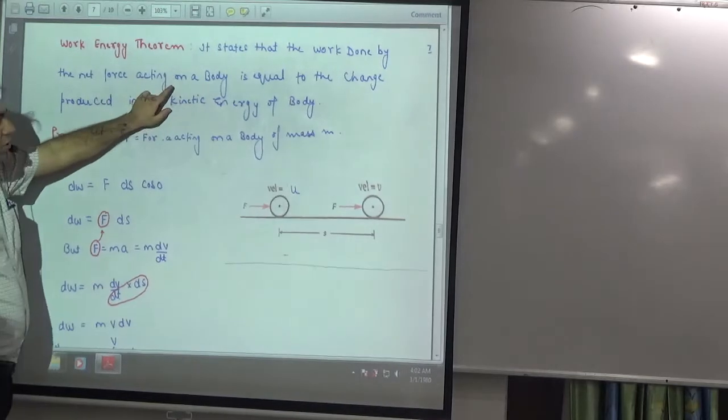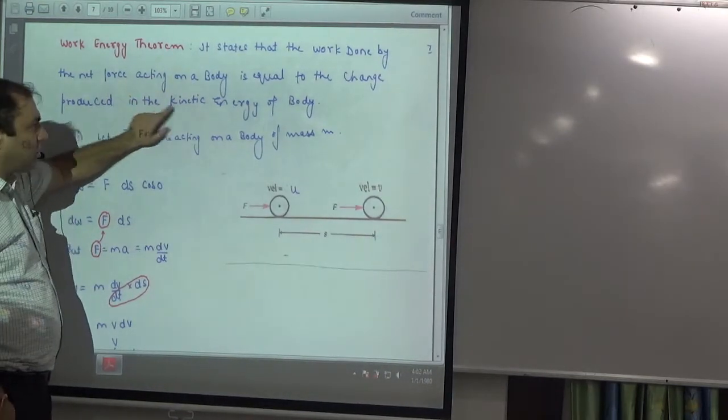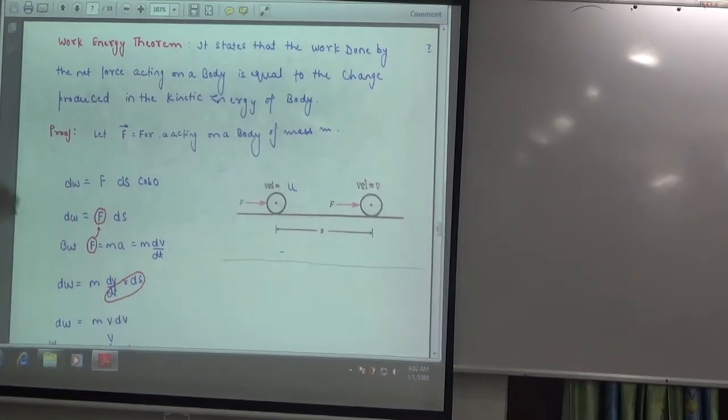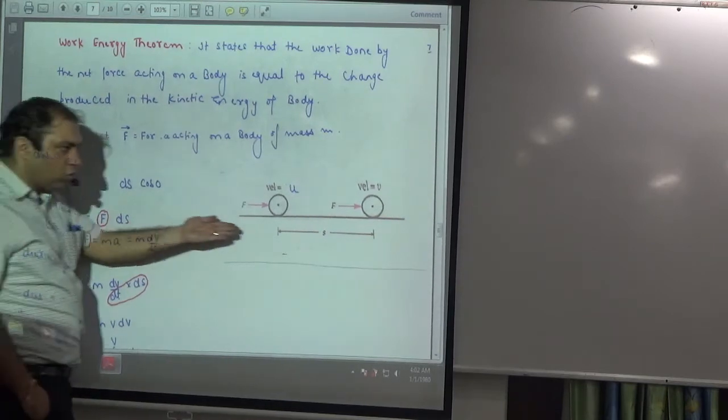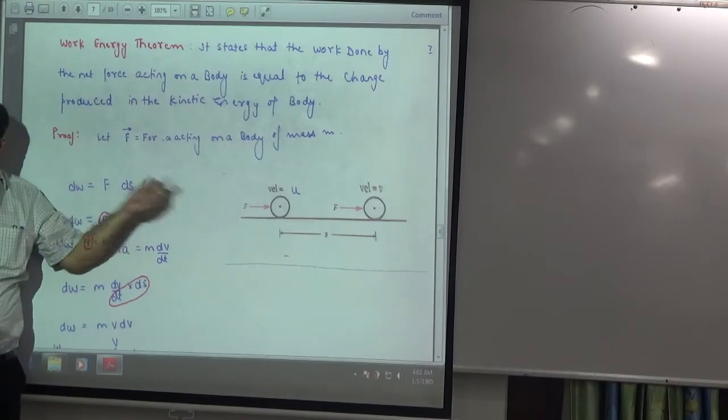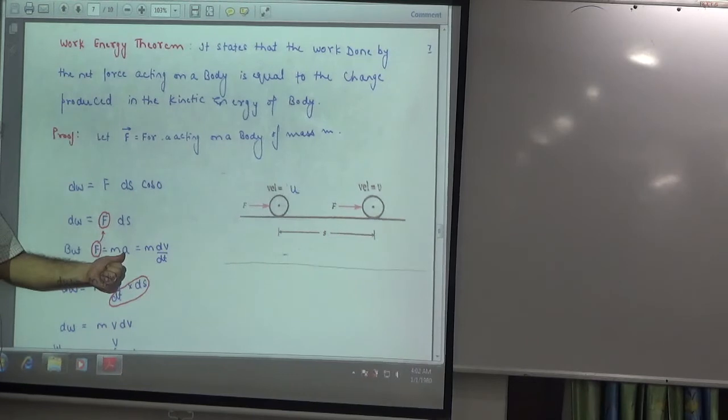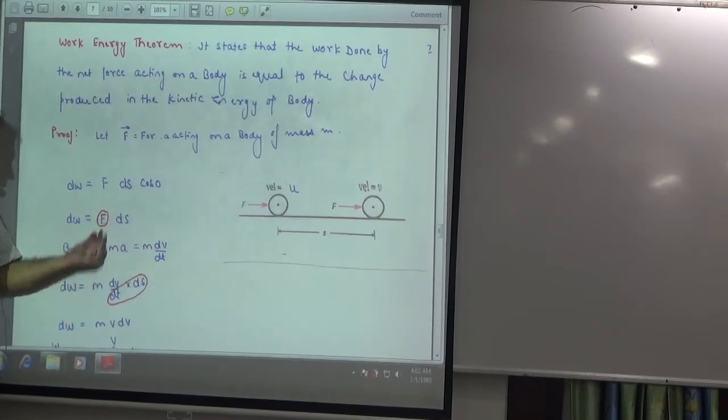Work done by a force acting on a body is equal to change in kinetic energy. Let's prove it. For the proof, the above proof is the same. You have to move this body first. Small amount of work done F ds cos 0, same direction. F is m into a, a is dv by dt.